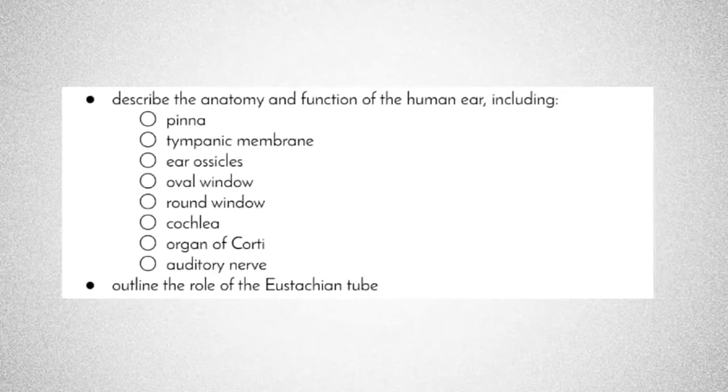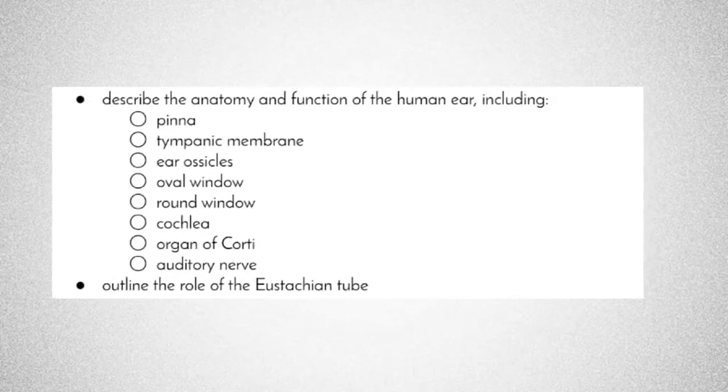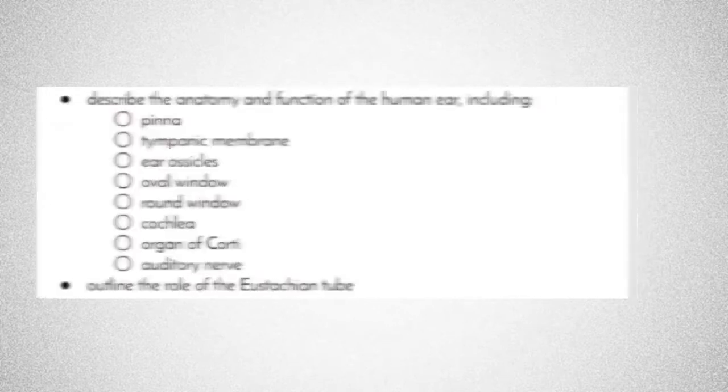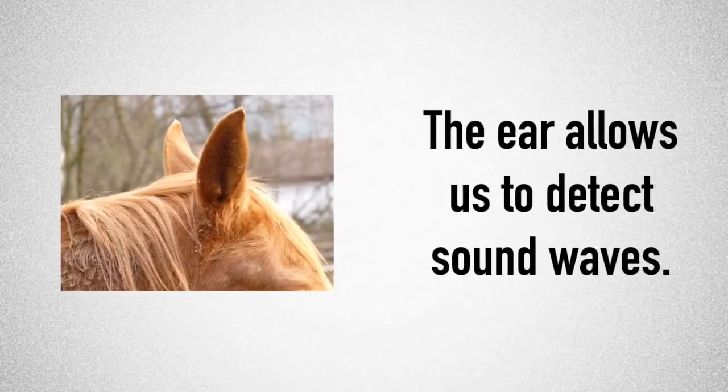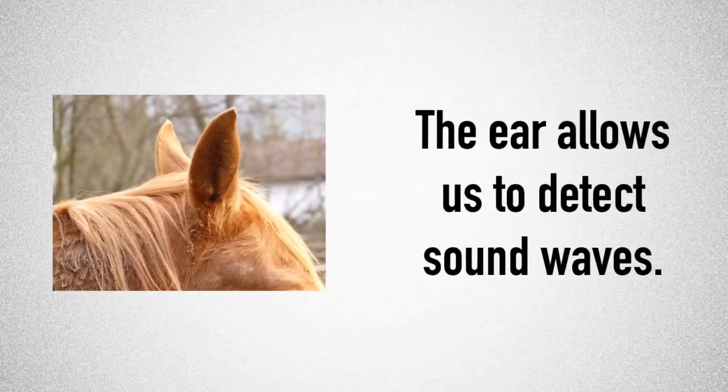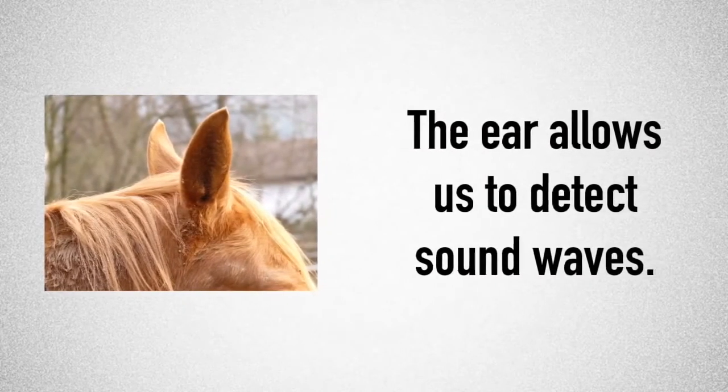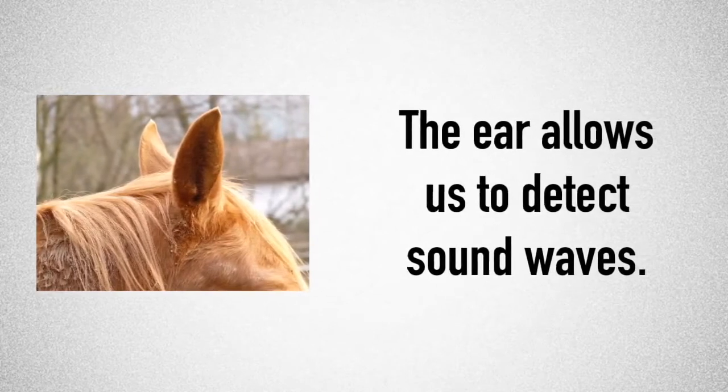oval window, round window, cochlea, organ of Corti, auditory nerve, and the role of the eustachian tube. So our ear is a great organ. It allows us to detect sound waves in our environment, and then those get sent to our brain for interpretation.